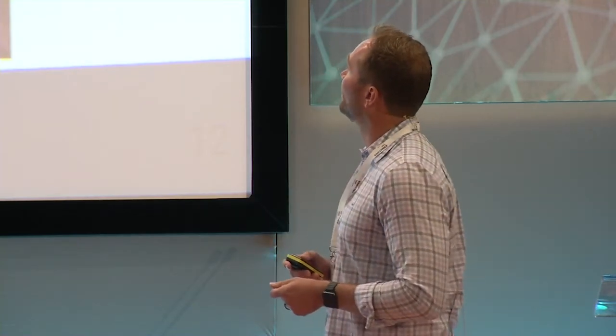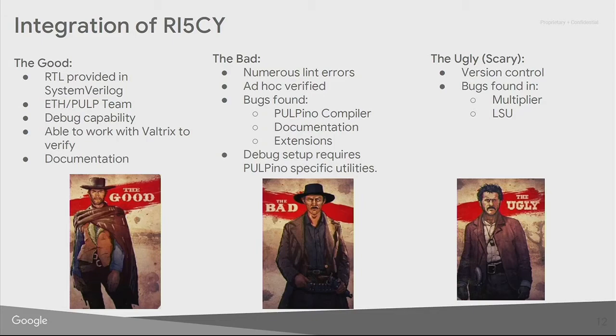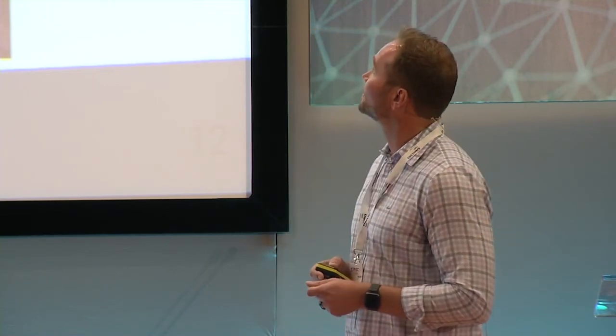The ugly — things that were jaw-dropping and scared us a little. Version control: the beauty of working with Valtrix was we didn't have to provide RTL — we could give them a git hash. But when you give them a git hash, you assume a certain version of RTL, and there was a script running underneath that grabbed something at the top of the tree. We addressed and fixed it, but there was a moment where we all had to gasp. We also found a few bugs that violated ISA compliance in the multiplier and the load store unit. Kudos to the PULP team — we told them the issue and they provided patches within a couple of days.